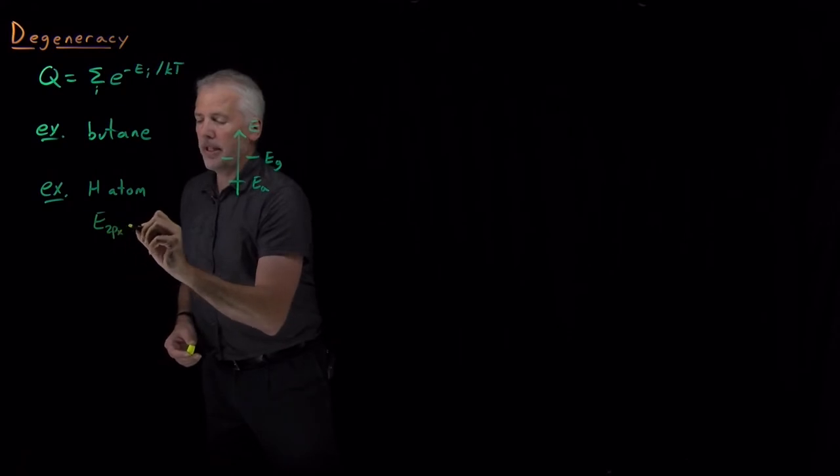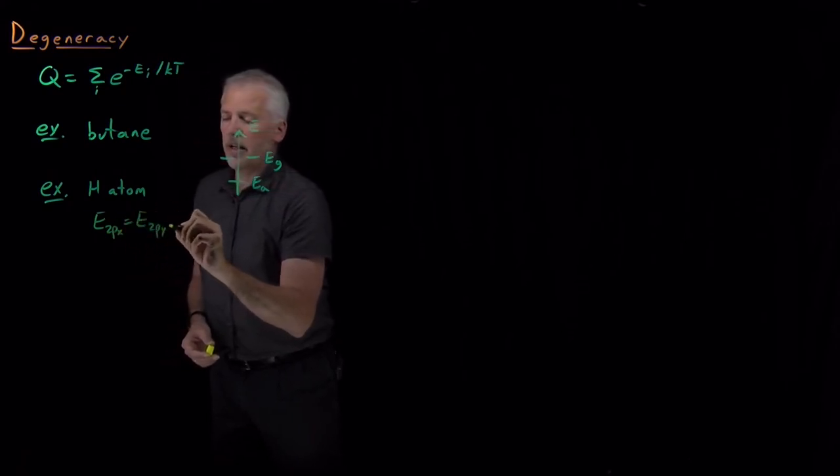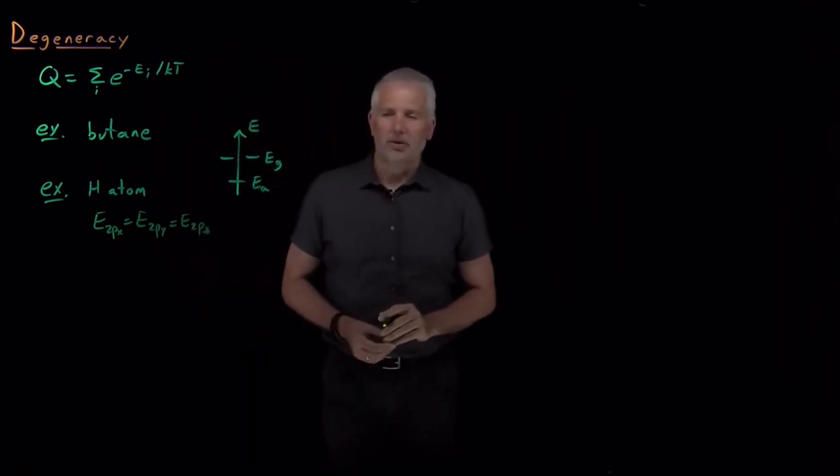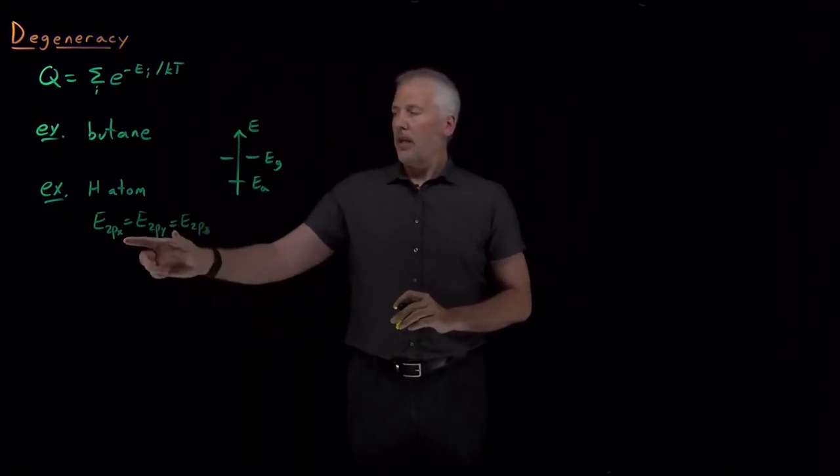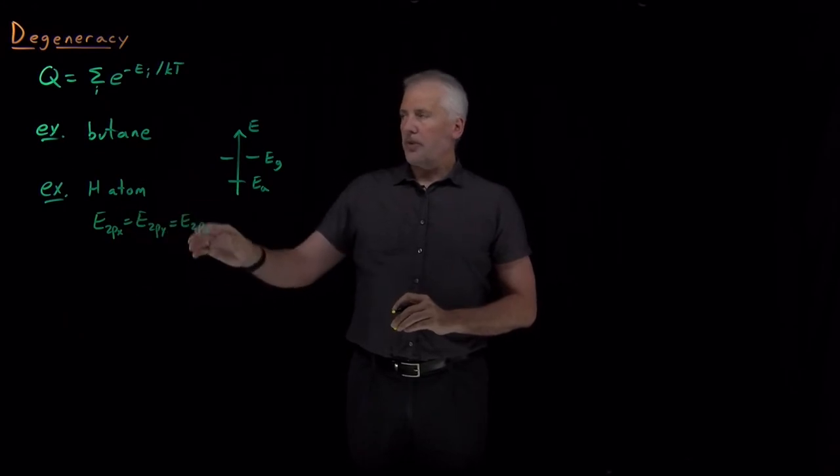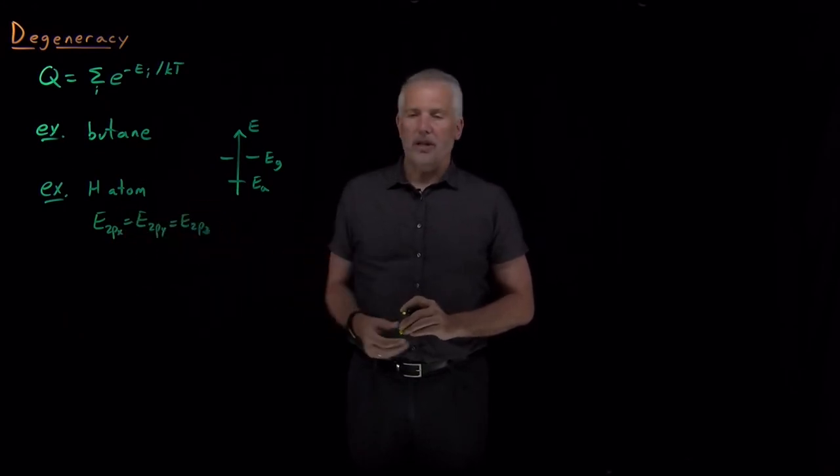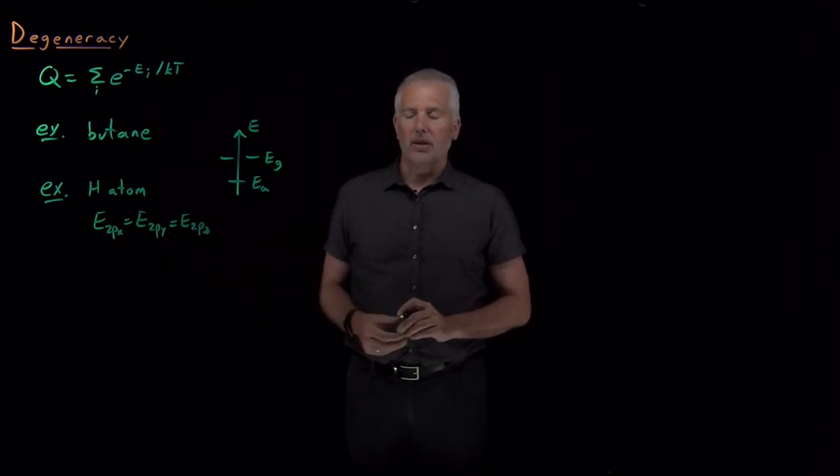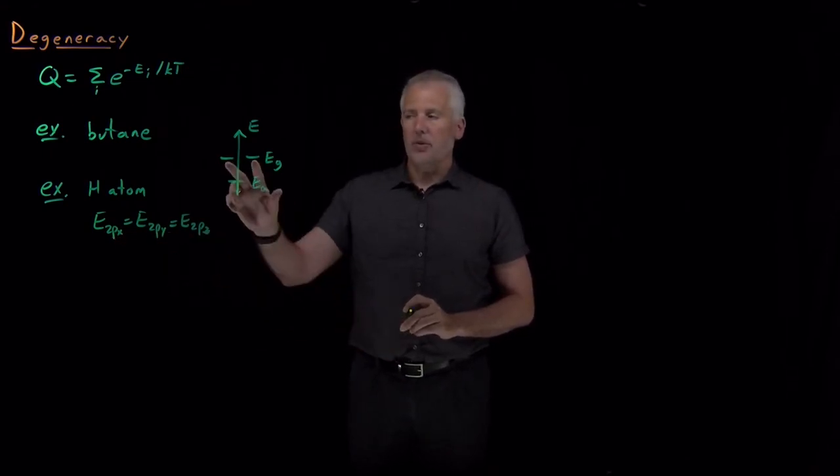Energy of the 2px and 2py and 2pz orbitals are the same. So, a couple of examples of how sometimes the energies turn out to be exactly the same as each other, usually for symmetry reasons like the three identical p orbitals with different orientations or the two equivalent conformations of butane that are rotated in opposite directions.